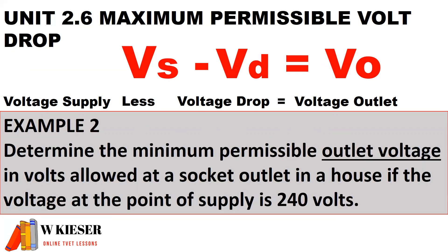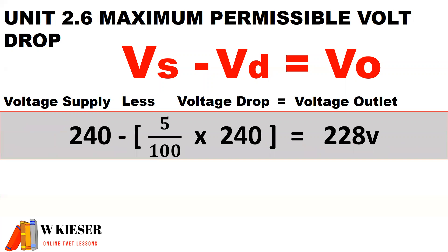To determine the minimum permissible outlet voltage in volts allowed at a socket outlet in a house if the voltage at the point of supply is 240 volts: the minimum outlet voltage is the supply voltage minus the volt drop, therefore 228 volts.